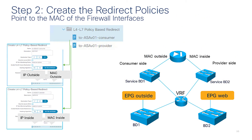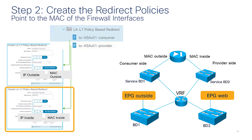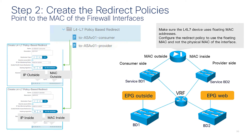Step 2: create the redirect policies, where you define the destination IP and MAC addresses for redirected traffic. Because this is a two-node deployment, there will be one policy for the outside interface and one for the inside interface. The MAC should be a floating MAC — the same MAC must be preserved upon failover between the primary firewall and the one that becomes primary after failover.